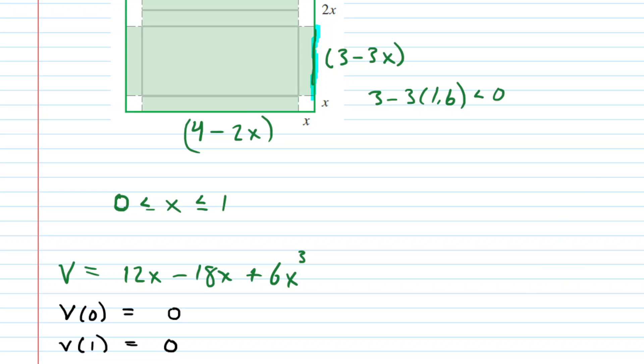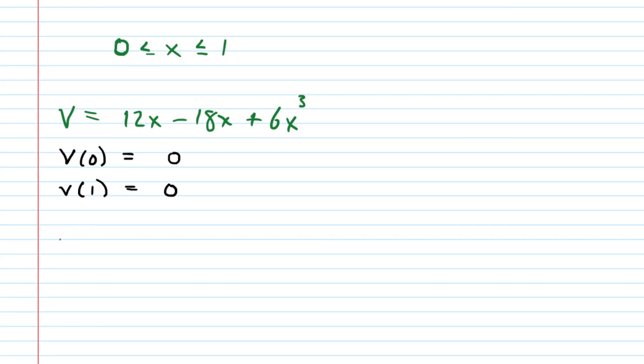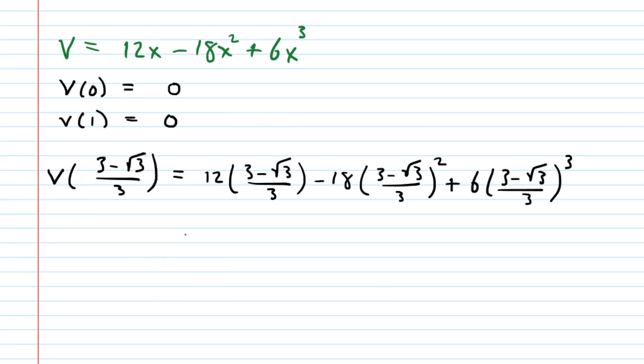What we need to do then is plug in our critical number that we had determined earlier. So you take your 3 minus root 3 all over 3 and you plug that in for x into the volume equation. So there we have done it, and when you crunch that down on your calculator you're going to get a volume of about 2.31. And because the measurements were in feet, our volume would be in feet cubed. So this is the approximate maximum volume.